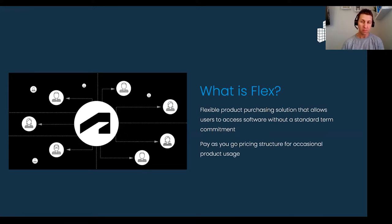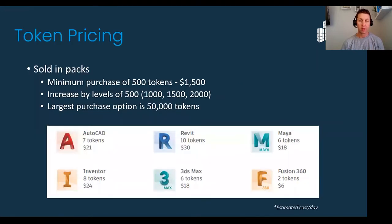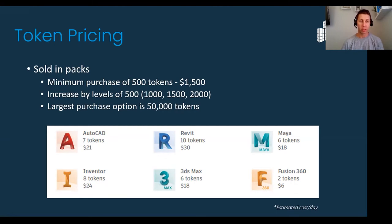It's a pay-as-you-go pricing structure for occasional users. The main question is pricing — how is it sold? It's sold in packs. The minimum purchase is 500 tokens, which is $1,500 through ATG. That increases in levels of 500, and the largest purchase option currently available to us is 50,000 tokens. Conversations with your sales rep or ATG CSR will be about the pricing structure and how many tokens you need.